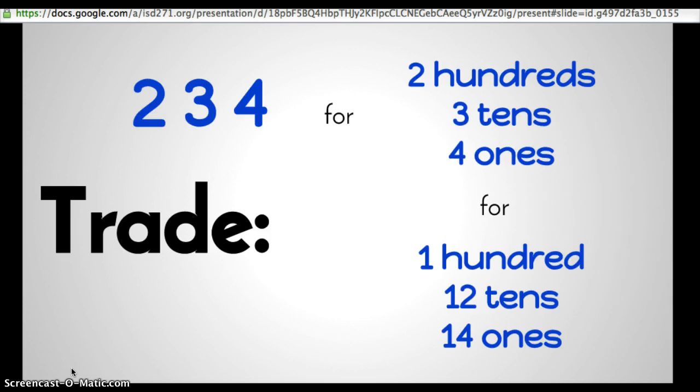You could even take the number 234 and trade it for two hundreds, three tens, and four ones. Some of you might be a little unsure about this, but you could even trade it for one hundred, twelve tens, and fourteen ones. If you don't believe me, we'll take a look at it later.